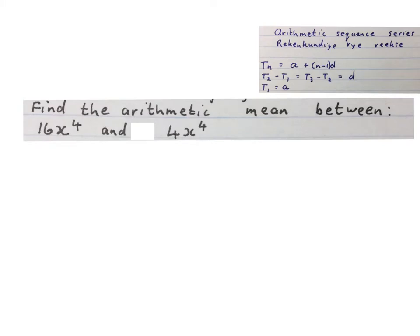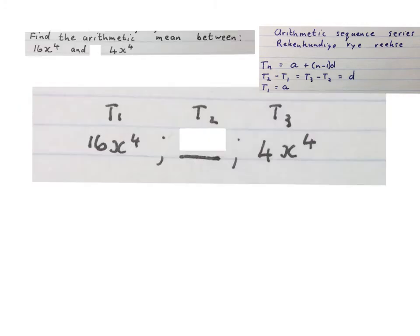The first question: find the arithmetic mean between 16x to the power of 4 and 4x to the power of 4. First we set up the sequence. We have term 1, we don't know what term 2 is, and we have term 3.